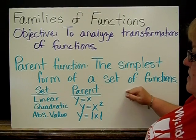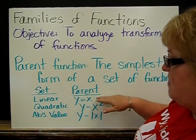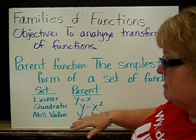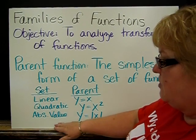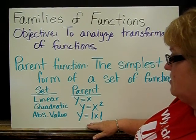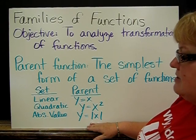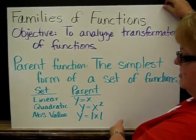A parent function is the simplest form of a set of functions. If you had a linear function, the parent would be y=x. If you had a quadratic function, the parent would be y=x². And if you had an absolute value function, the parent would be y=|x|. You would then transform these to get your other graphs or functions.